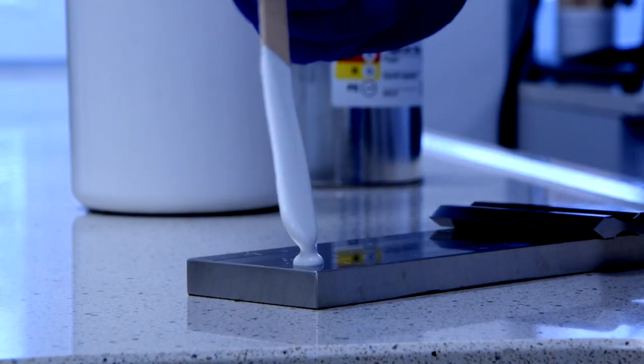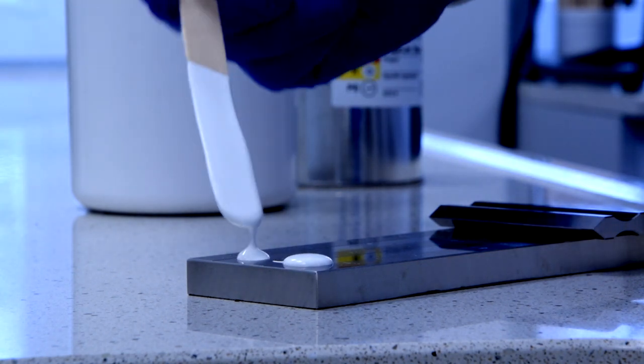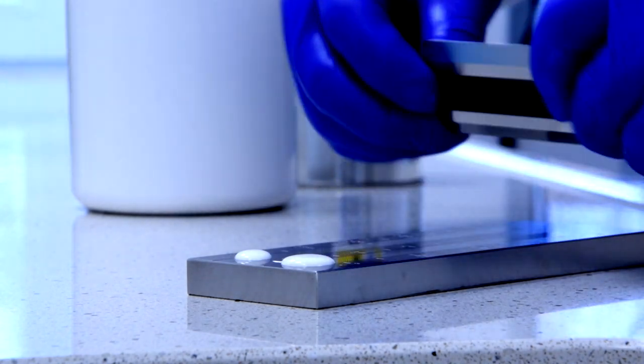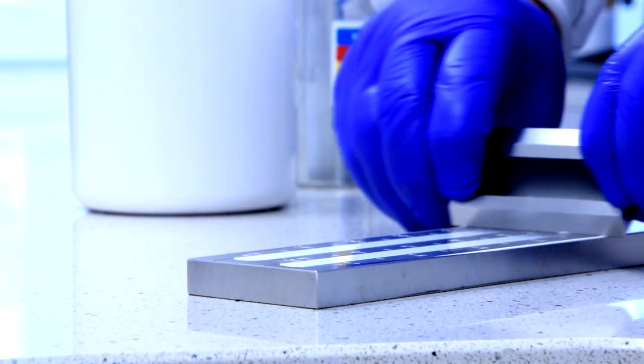Another test is the Hegmann grind test. Here you check with a grindometer how well the particles are dispersed, which affect the gloss, sheen and the appearance of the coating.